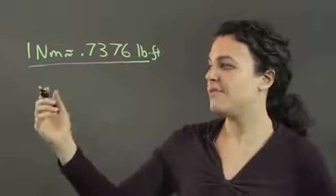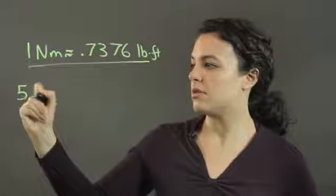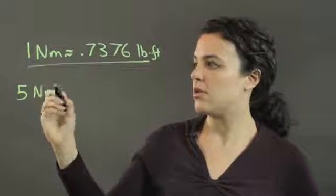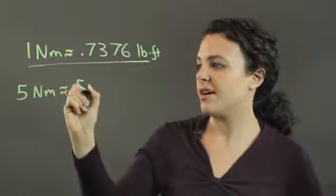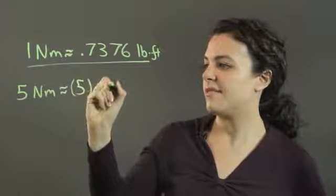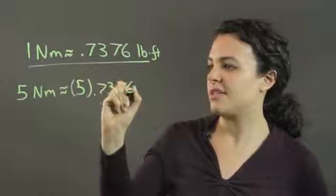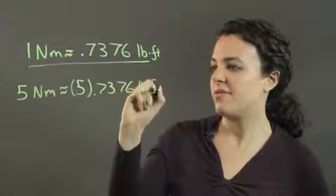So if you have 5 Newton meters, then they're going to be equal to whatever 5 times 0.7376 pound-feet are.